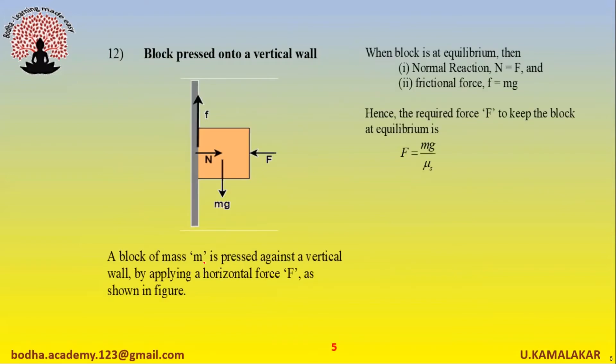Consider a block of mass m pressed against a vertical wall by applying a horizontal force F as shown in figure. The force required to keep the block at equilibrium is given as: F equals mg divided by mu_s.